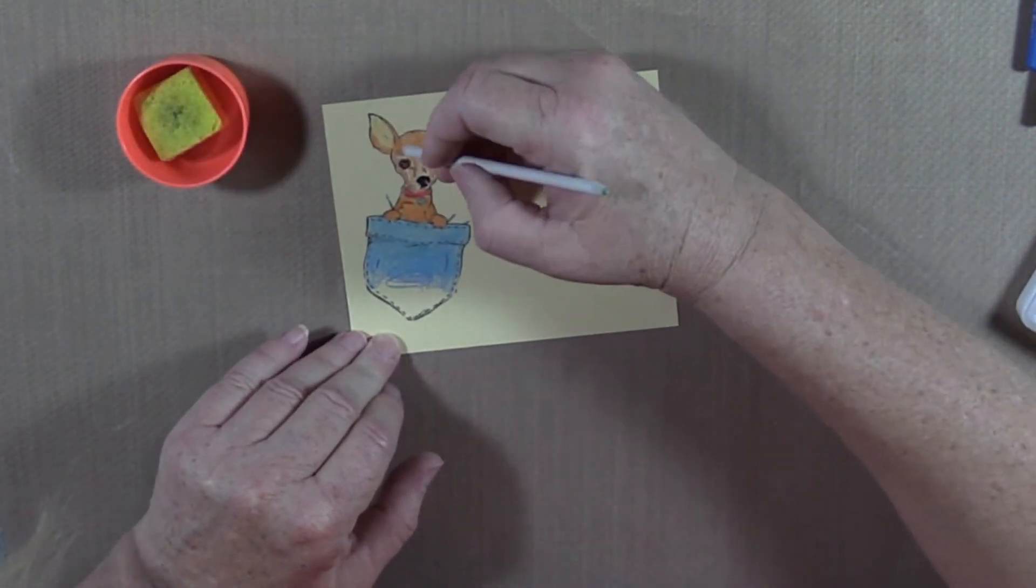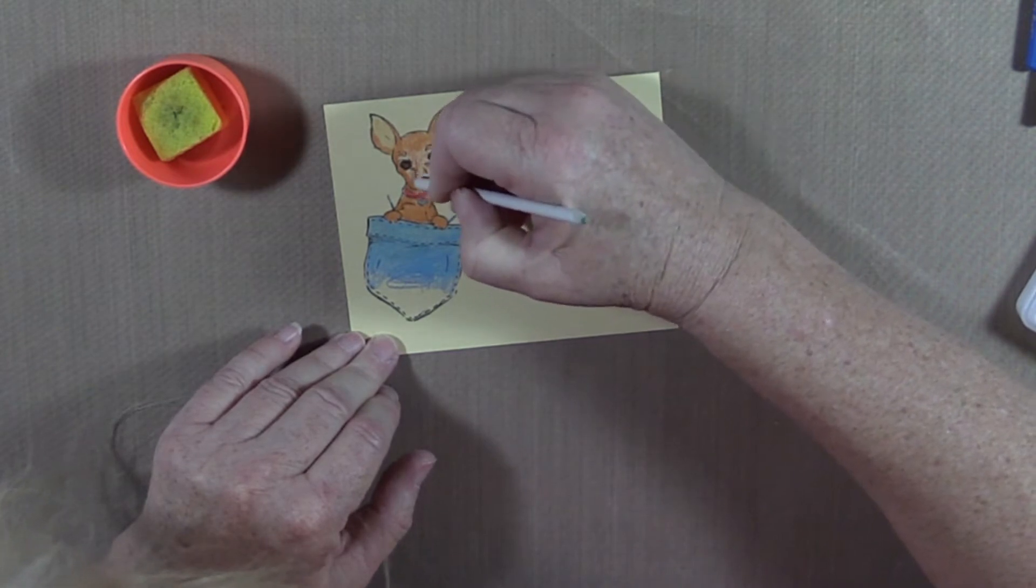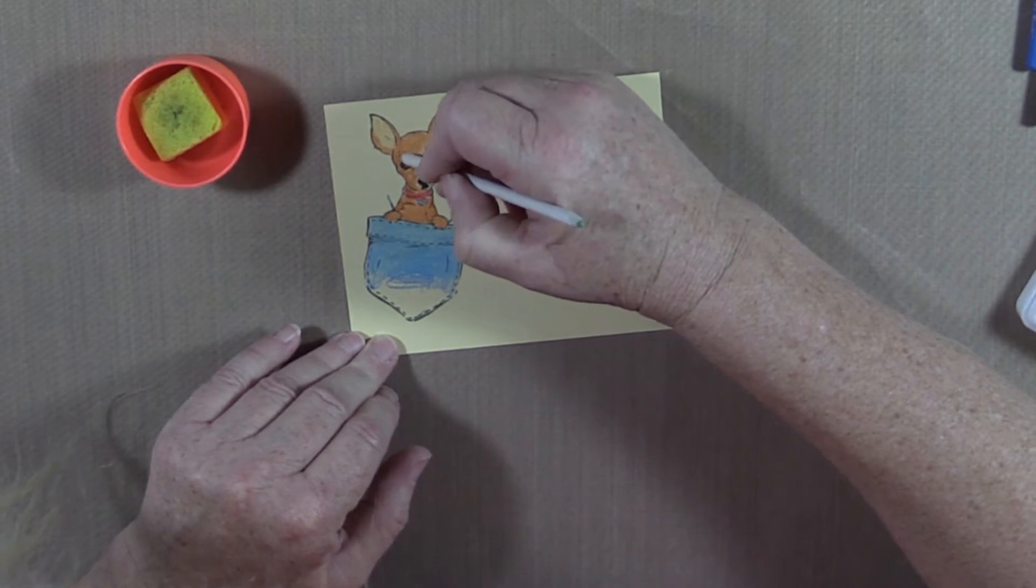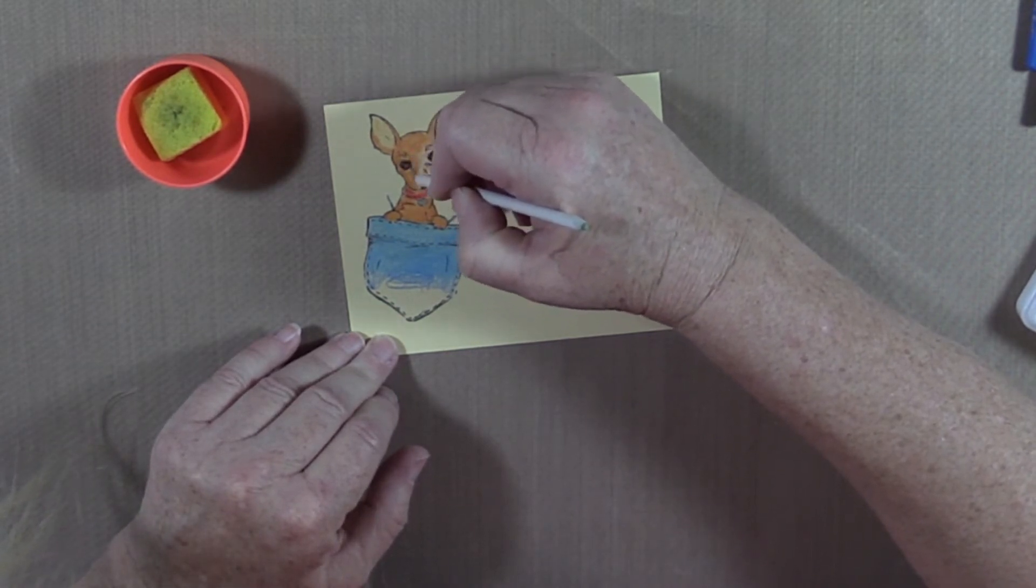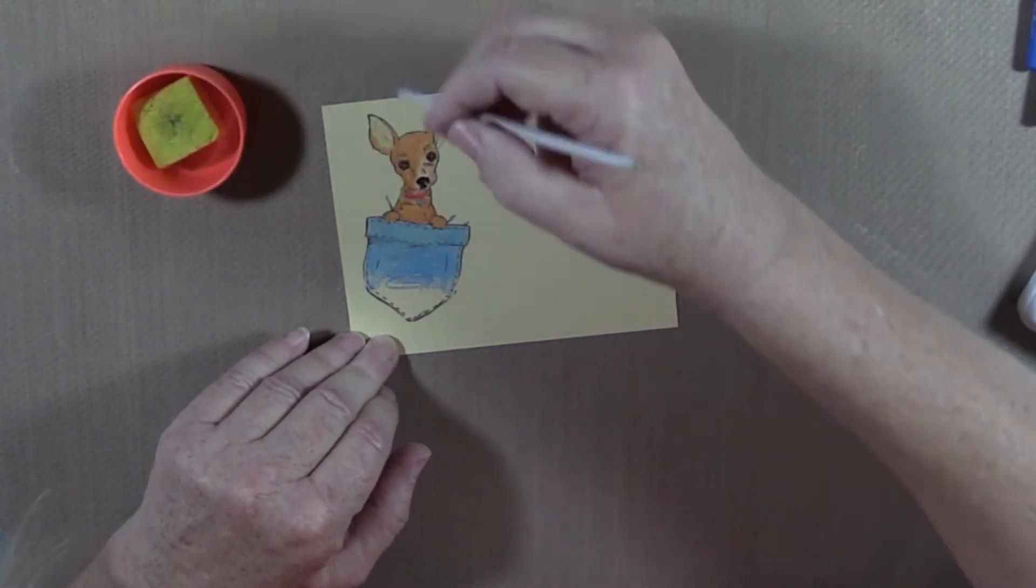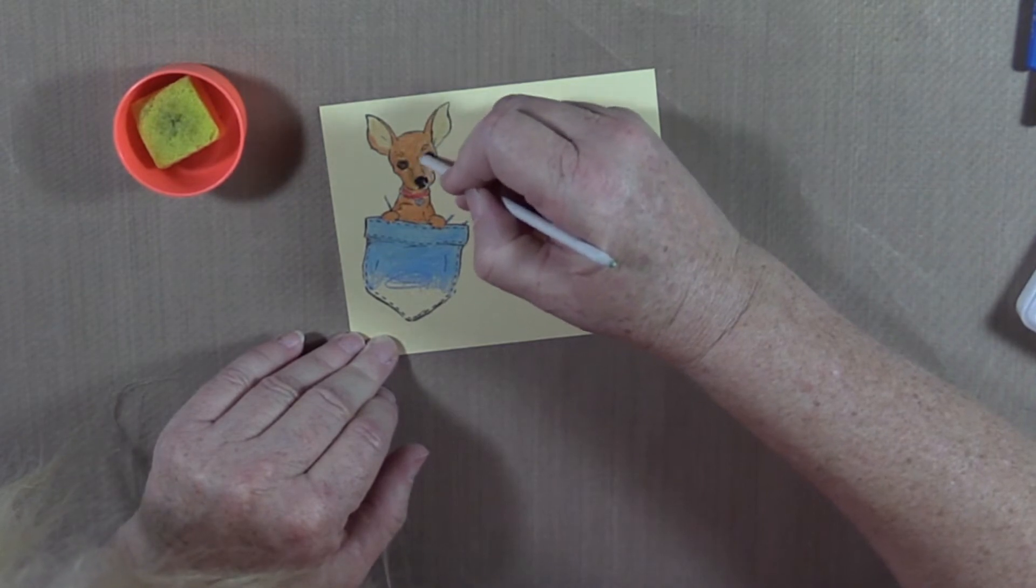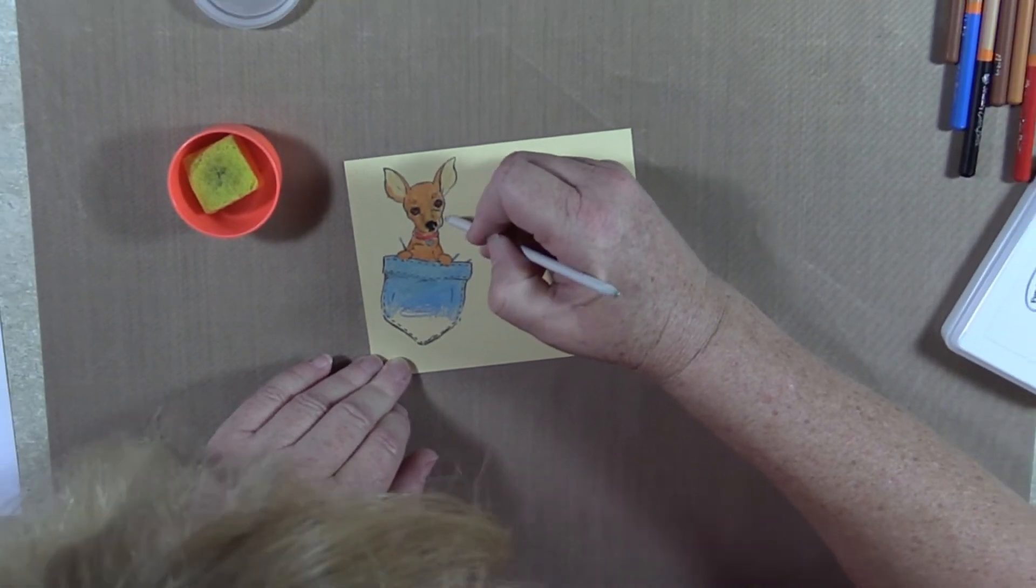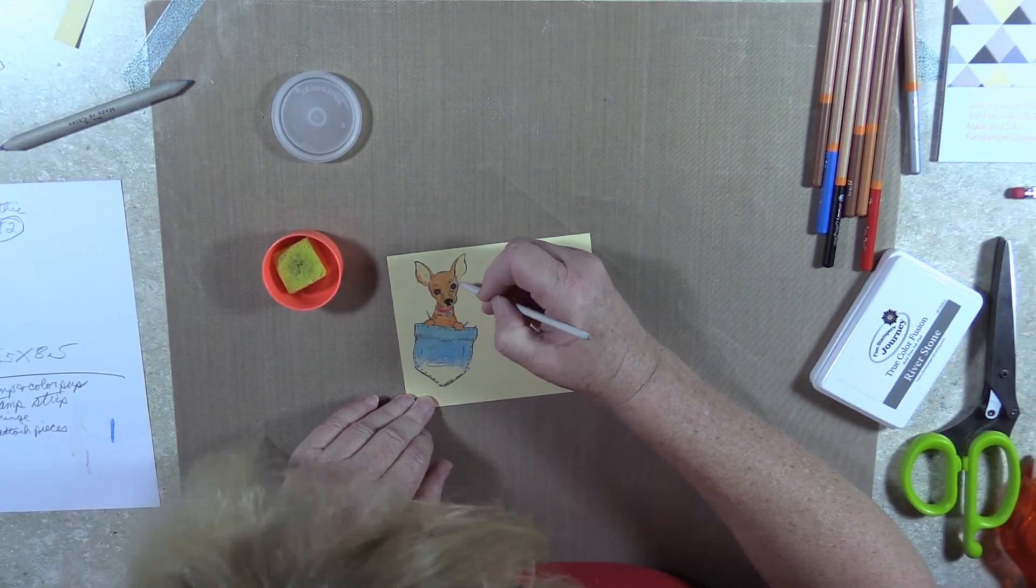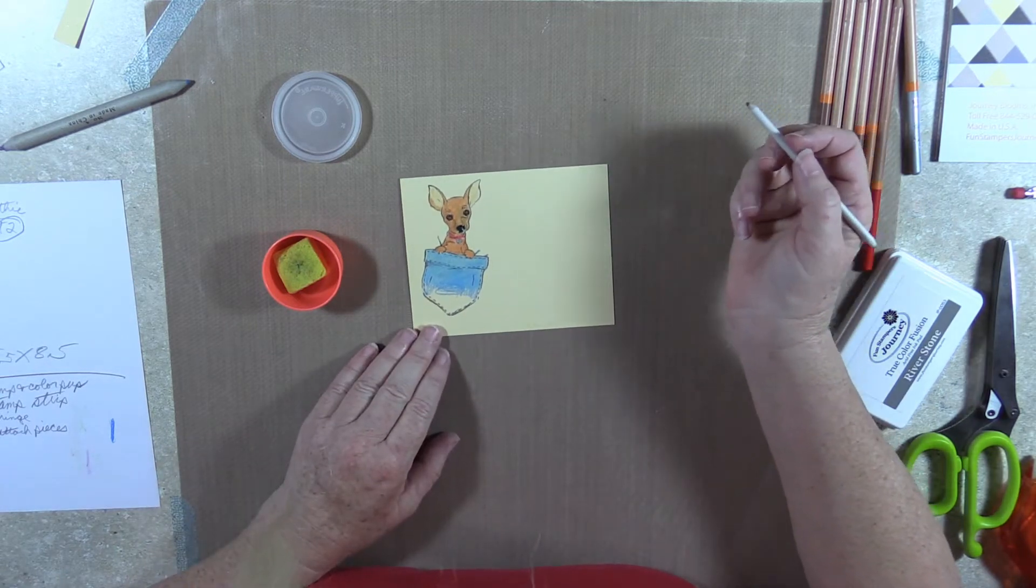I live in Arizona, southern Arizona, and lots of people here have chihuahuas. I don't recall it being that way when I lived in Minnesota, but a lot of people here have the chihuahuas, so this is just such a perfect card. Over here. Okay, there's my puppy.